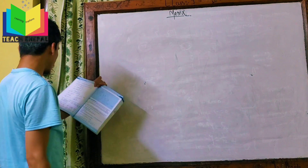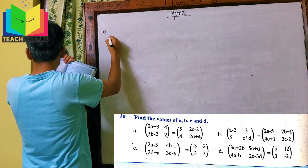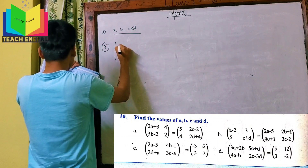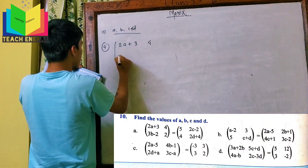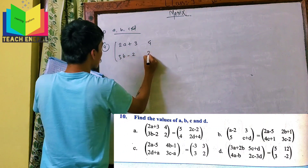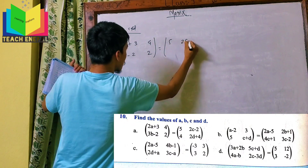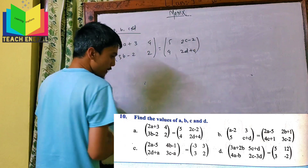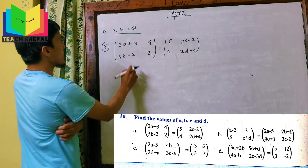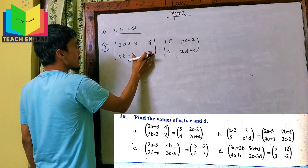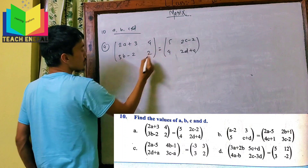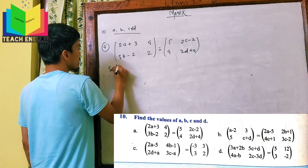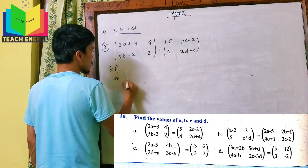We have to find the values of A, B, C, D. The matrix equation is: 2A+3, 3B-2, 2C-2, 2B+4 equals another matrix. These are 2×2 matrices being set equal. So we equate the corresponding elements of the equal matrices.